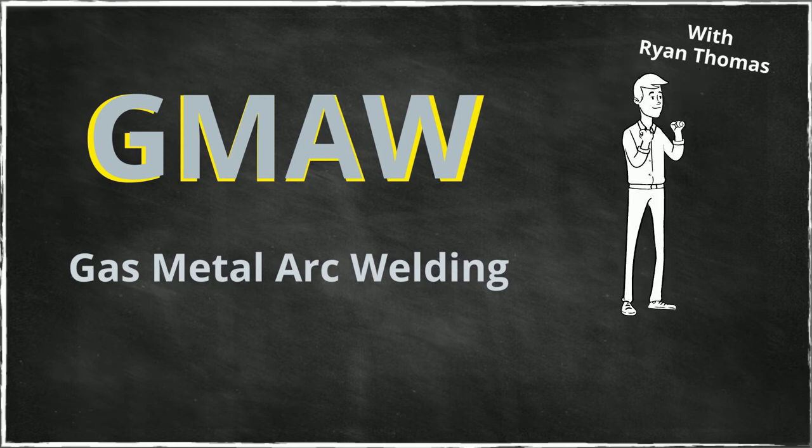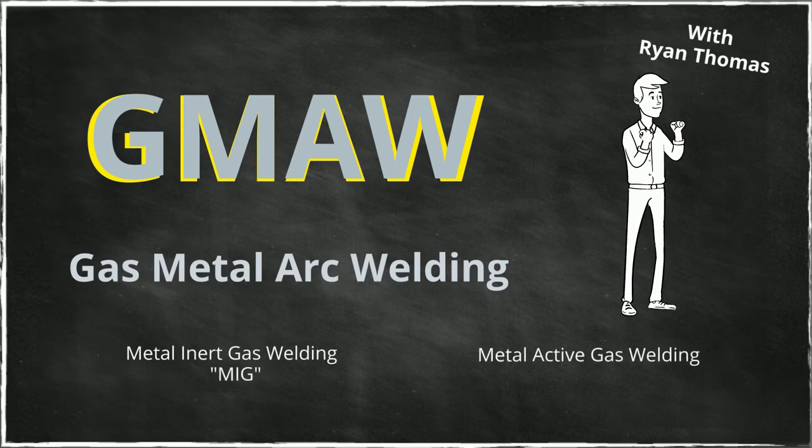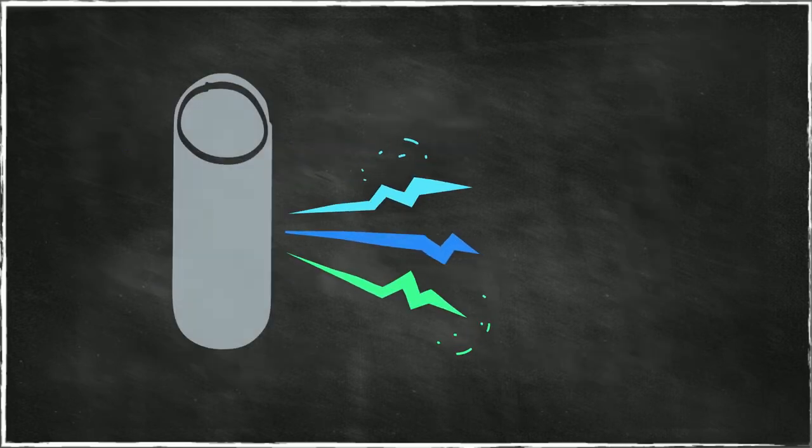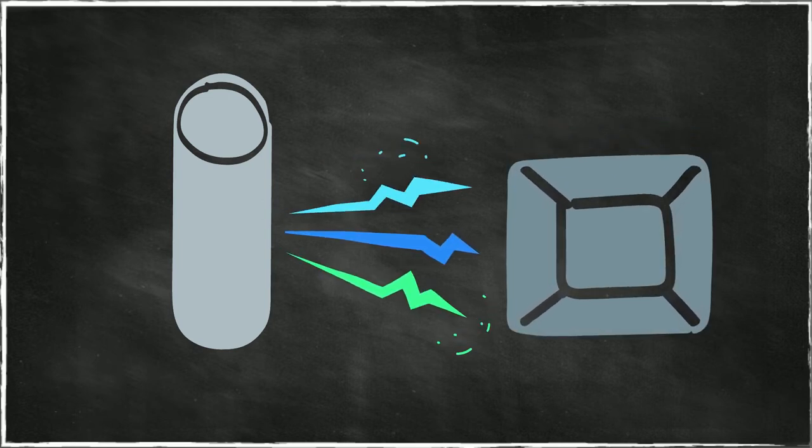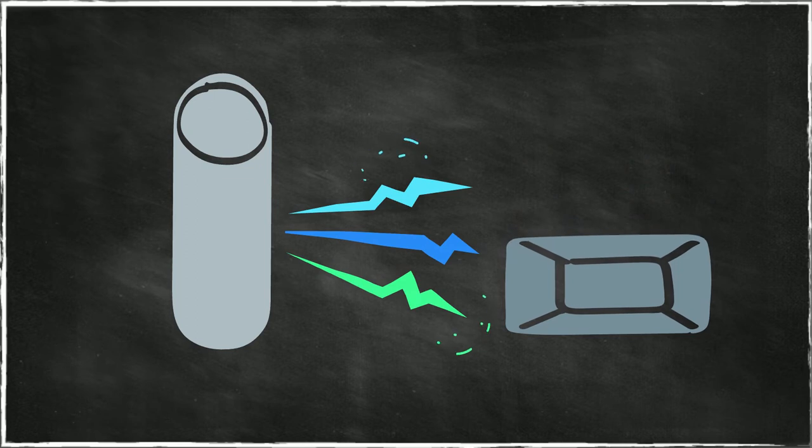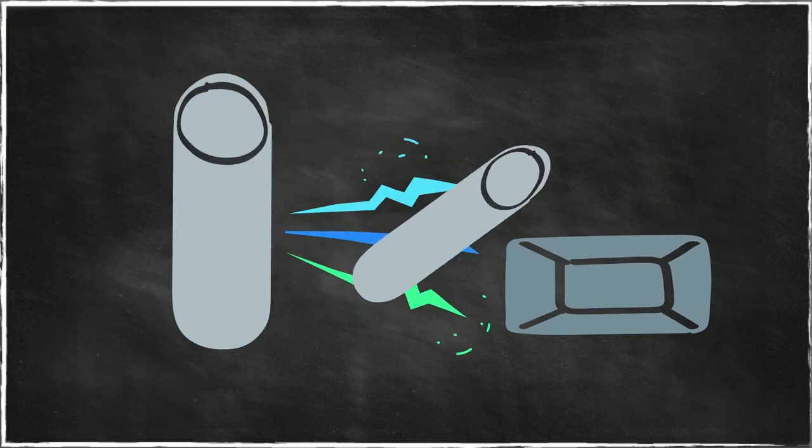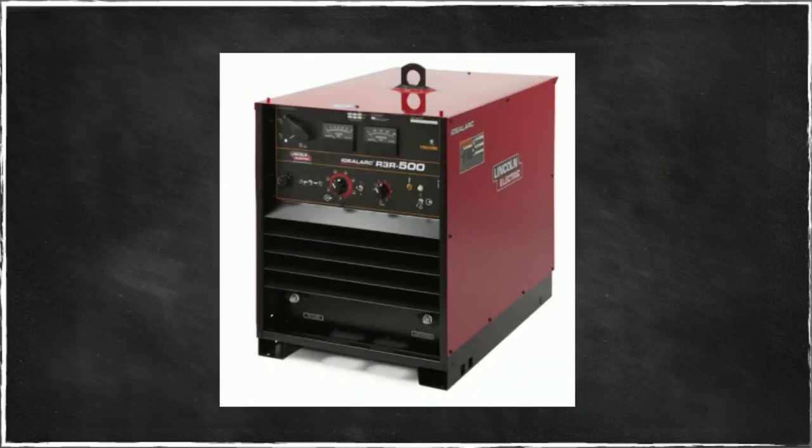Gas metal arc welding, GMAW, sometimes referred by its subtypes, metal inert gas welding, MIG welding or metal active gas welding, MAG, is a welding process in which electric arc forms between a consumable MIG wire electrode and the workpiece base metal, which heats the workpiece base metals, causing them to melt and fill the joint with consumable wire. The most common applications of gas metal arc welding use a constant voltage power supply.